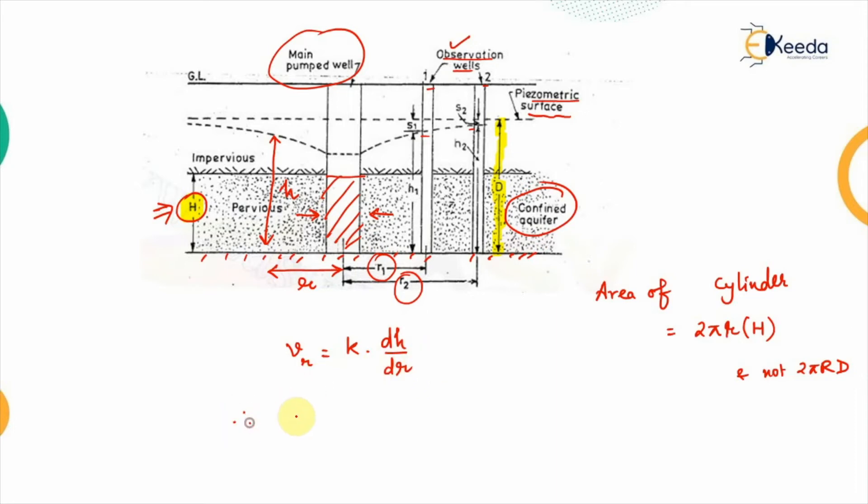So, therefore, the discharge is equal to the area into the flow. So, discharge will be equal to the 2πr into h into the velocity of flow that is k into dh over dr.